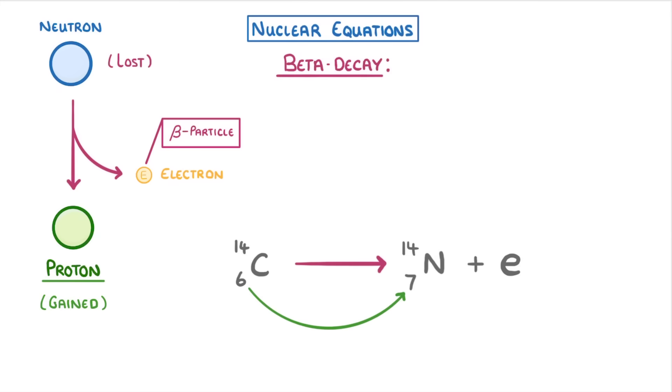Just like with the alpha particle, you can also represent the beta particle with an actual beta symbol. But either way, we have to put a minus 1 at the bottom to show that it has a charge of minus 1, and 0 at the top to show that its mass is pretty much 0.